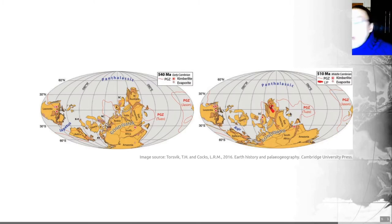This Iapetus ocean actually first opened during the late pre-Cambrian. It followed the breakup of a supercontinent called Rodinia. It developed throughout the Cambrian and reached its widest extent in the late Cambrian, a little bit after this paleogeographic reconstruction here. It extended as much as 4,000 kilometers across at its widest.